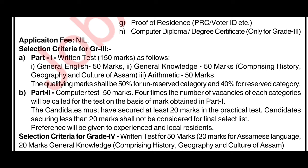Out of 150 marks, unreserved candidates need 75 marks (50%) to qualify. Reserved category candidates need 60 marks (40%) to qualify. The written test is for 150 marks total.